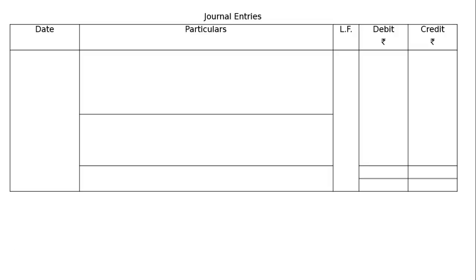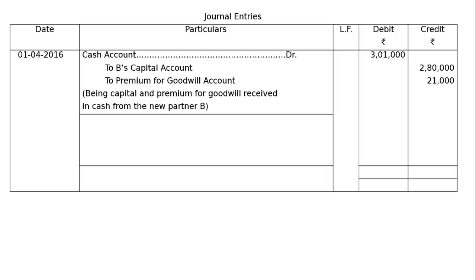Then, journal entries in proper journal format — date, particulars, folio, debit Rs., and credit Rs. Date will be 1st April 2016. Cash account debit Rs. 3,01,000. To B's capital account Rs. 2,80,000 — see the working notes. To premium for goodwill Rs. 21,000. Being capital and premium for goodwill received in cash from the new partner B.